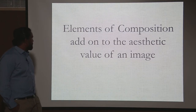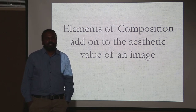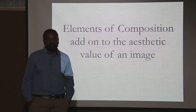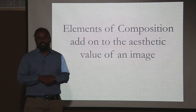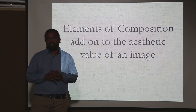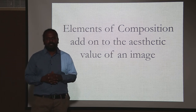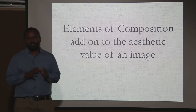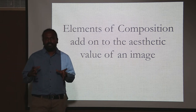So what exactly do the elements of composition do? Elements of composition add on to the aesthetic value of an image. Aesthetic value means it makes the image look good — it not only gives you the detail but also adds a sense of beauty to the image. This is the duty of these elements. If the elements are employed properly, they will enhance the value of the image.